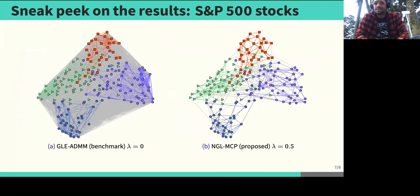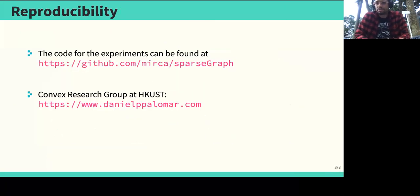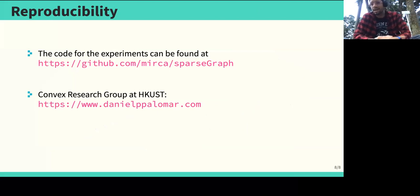This is a financial stock data set where we can observe that our proposed algorithm yields a much more interpretable graph. All the results for our paper live on GitHub — the code is open source — and if you are interested in learning more about the work we've been doing here in sunny Hong Kong, please check out our research group website. Thank you very much.